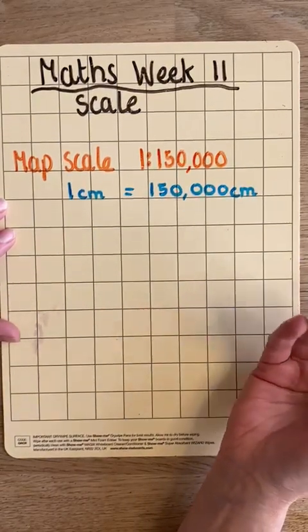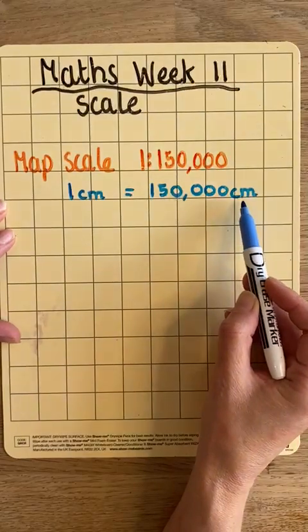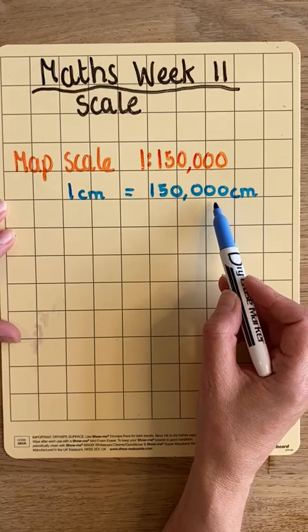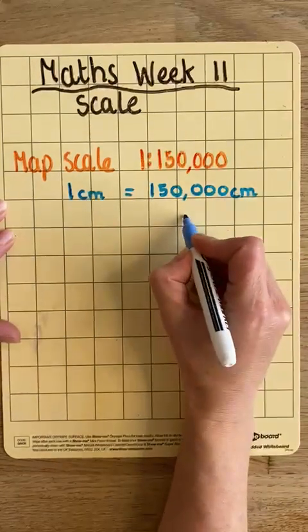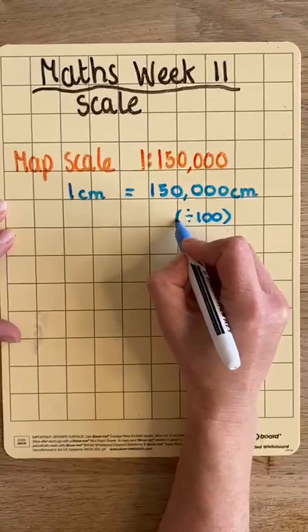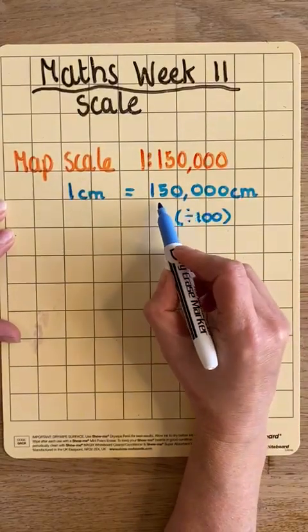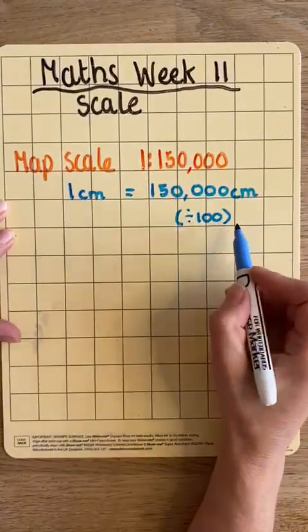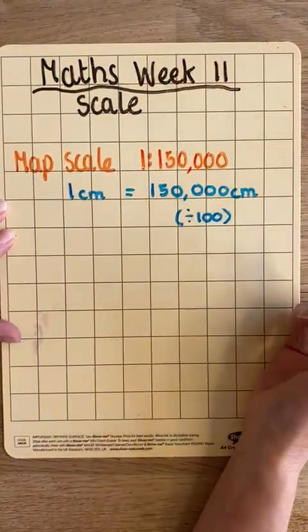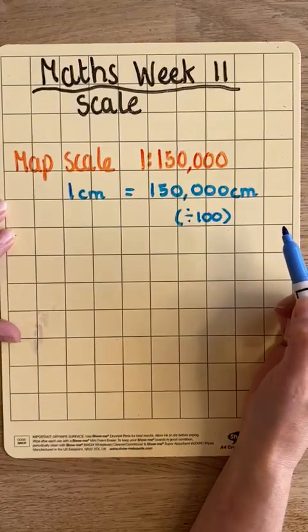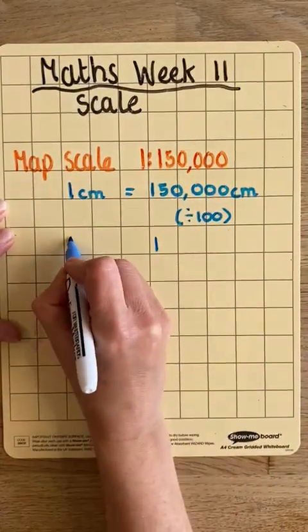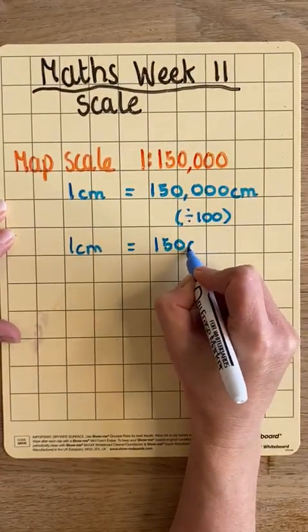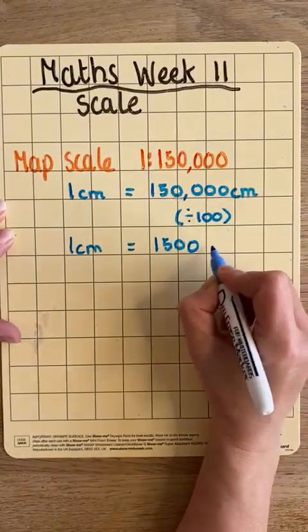I'm going to do that in a couple of steps. First of all, I'm going to change my centimetres into metres. I know there are 100 centimetres in a metre, so I'm going to divide this by 100. So, to do that, my 150,000 would have to move two columns. Every digit would move two columns to the right. And those two last zeros would disappear. So, my new number, so 1 centimetre, would actually be worth 1,500 metres.